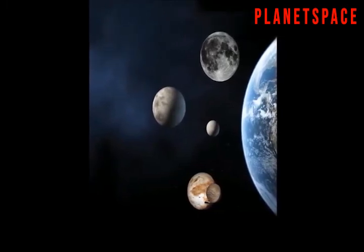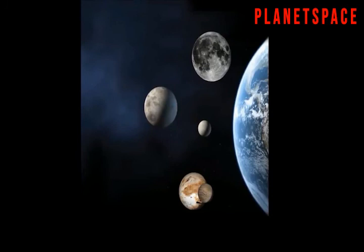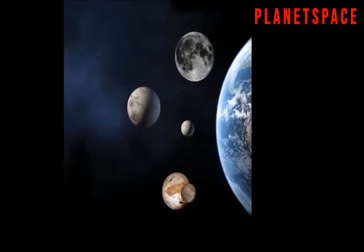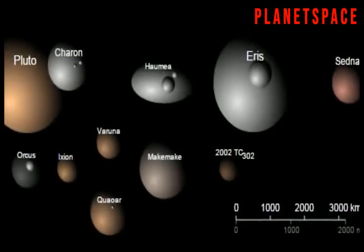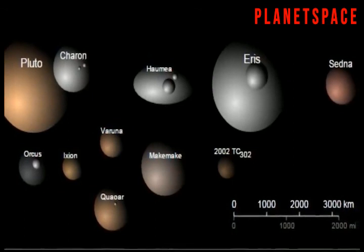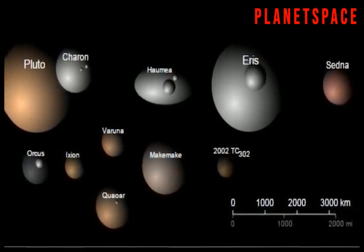In 2006, after 76 years being listed as a planet, Pluto was declared a dwarf planet to show that it was something that was like a planet, but much smaller. There are at least six dwarf planets in the solar system, and possibly many more.